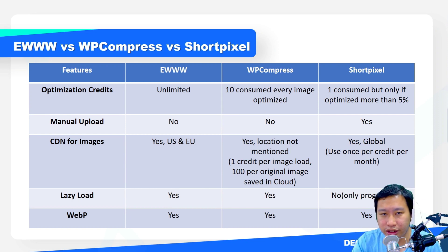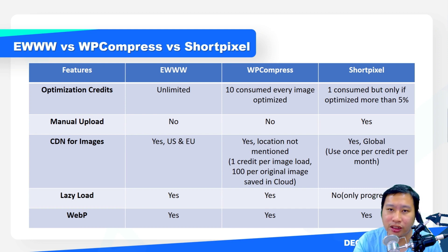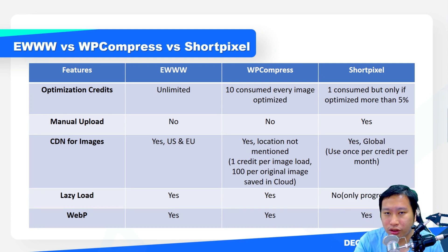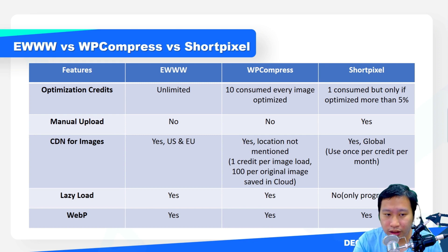Next is WP Compress. Every time it optimizes an image for you, it eats up about 10 credits. Even though WP Compress credits are very generous, every image takes up 10 credits. If you have 100 images — which is really about 20 real images on your site, since WordPress uploads several different sizes of each image — compressing them all with WP Compress would already take about 1,000 credits. That's something to consider.